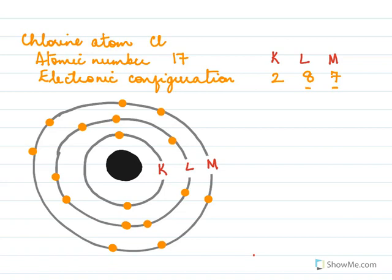Let's examine the M shell, which is the valence shell. In the M shell chlorine has just 7 electrons. Having 7 electrons is highly unstable. So chlorine tries to attain stability by getting 8 electrons — that's an octet state. The only way it can do that is if it accepts one electron from any other atom, giving it 8 electrons in the valence shell.